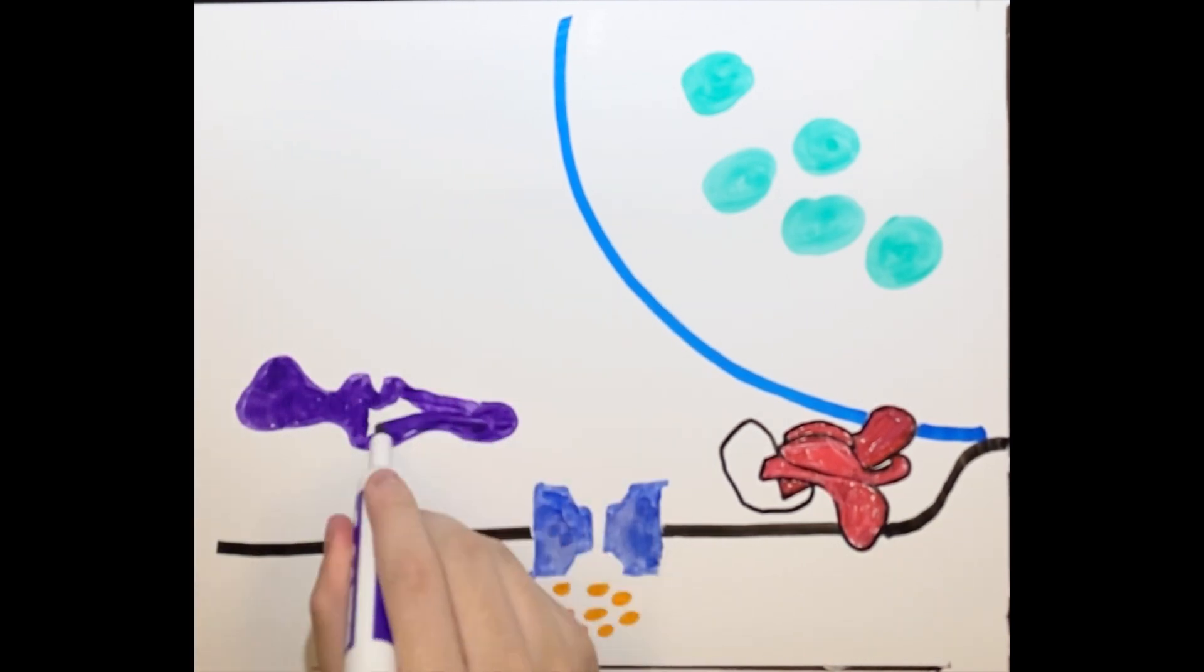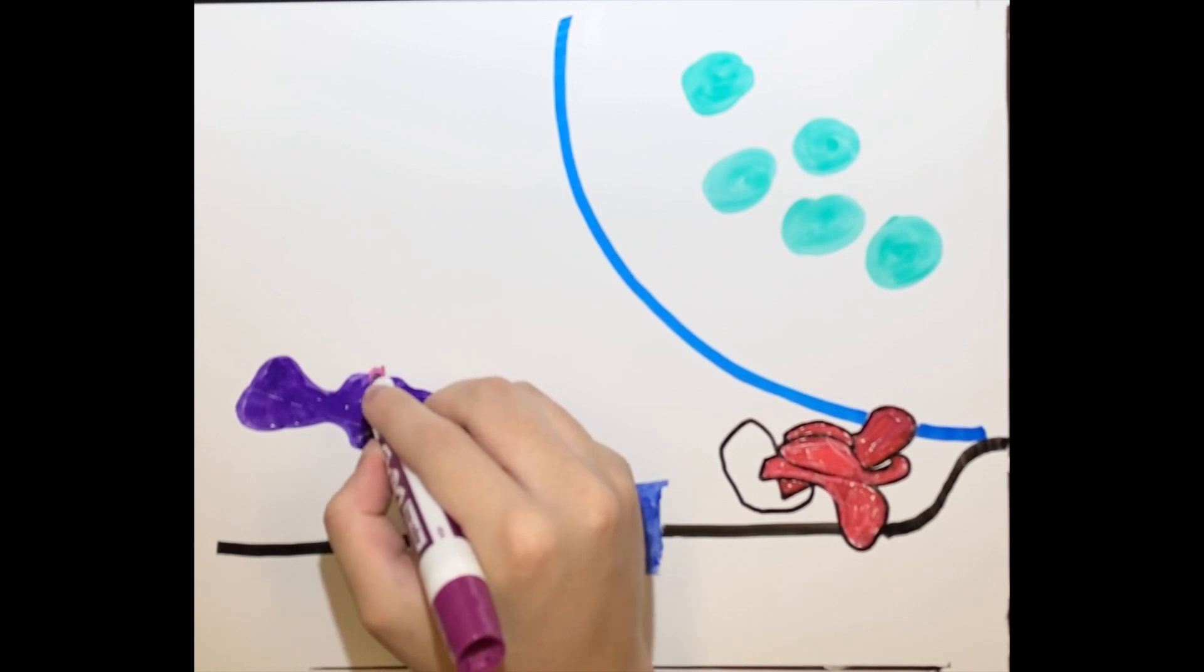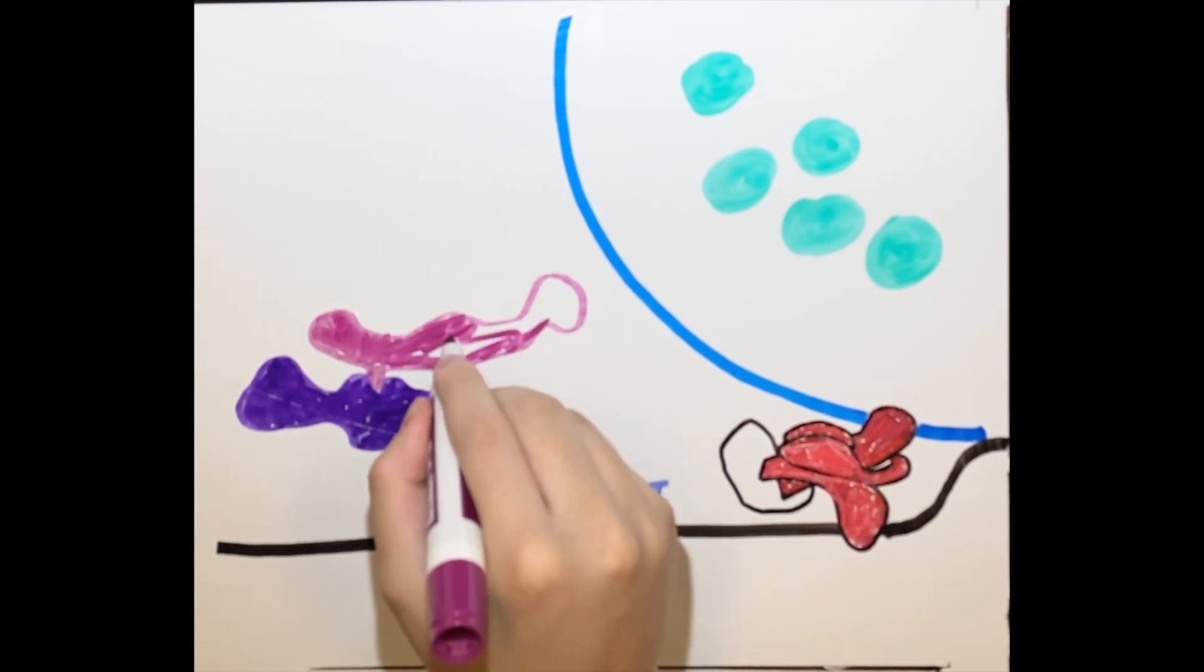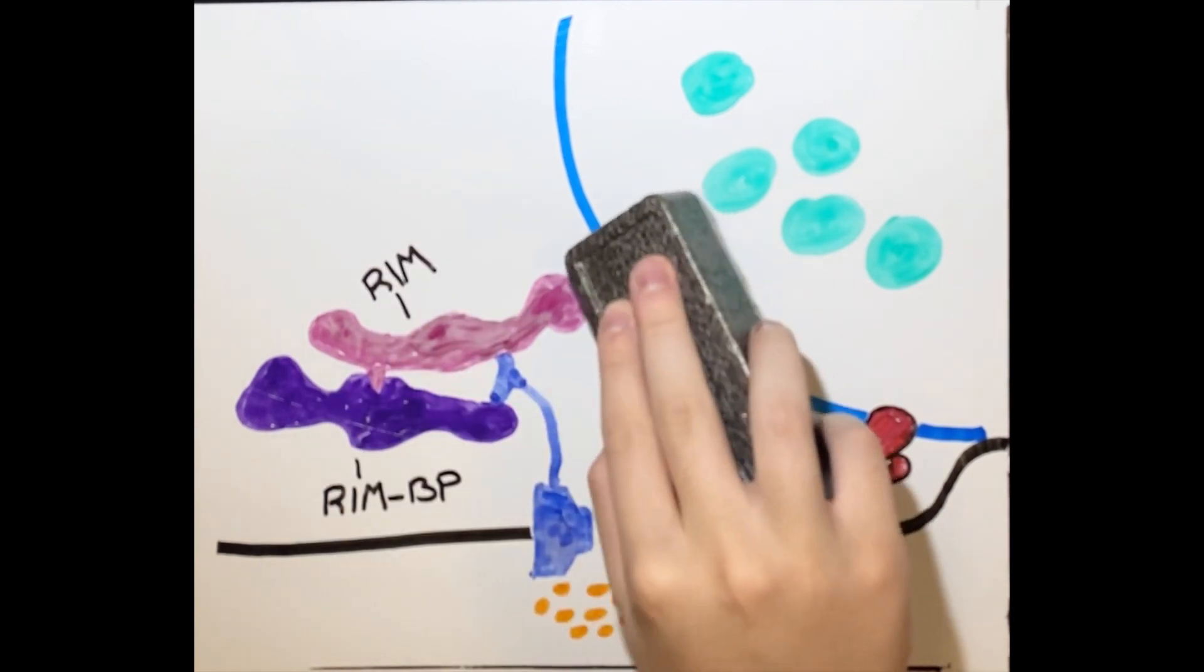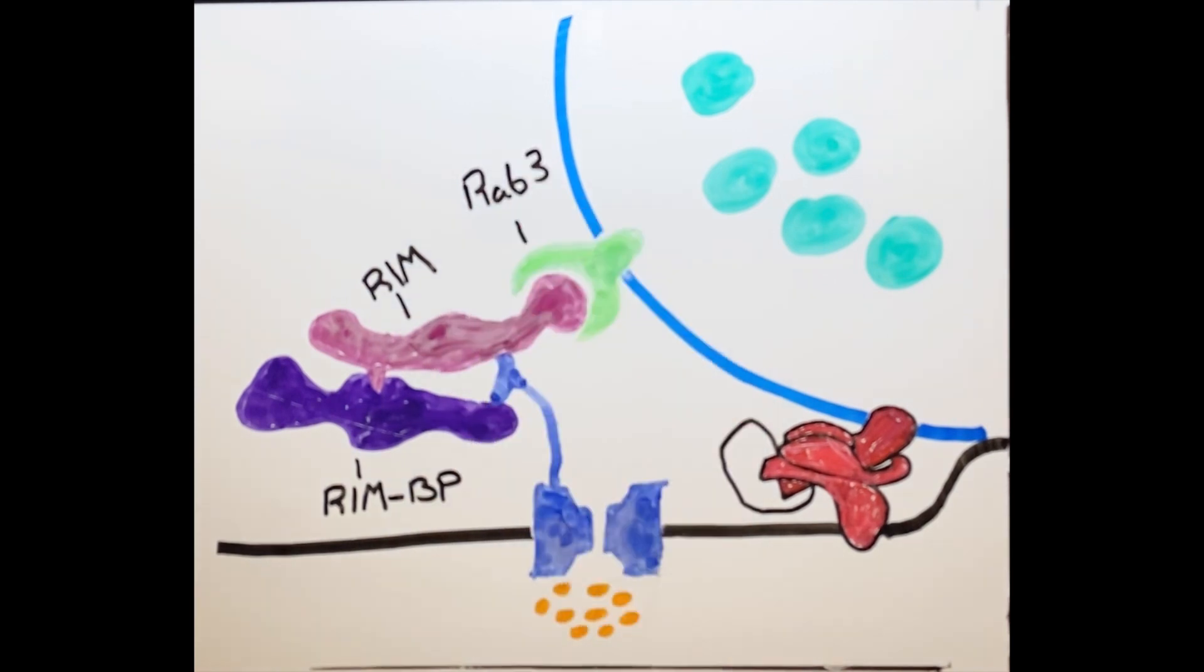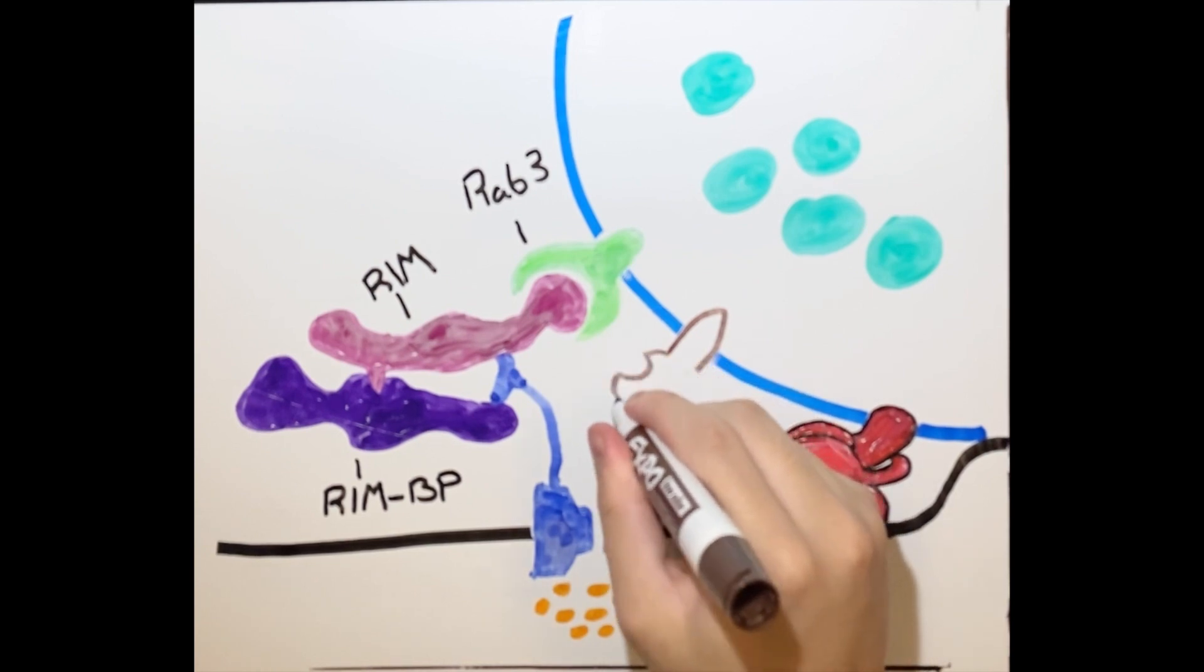The active zone is a specialized area in the membrane that holds many Ca2+ voltage-gated channels. The channels have two proteins attached to it as another measure to make sure that the vesicle is at the proper place for fusion. These two proteins are RIM and RIM-BP. When the vesicle comes to release neurotransmitters, the RIM protein will bind to the Rab3 protein on the vesicle membrane. This binding occurs so that the vesicle will remain in place near the calcium channel.